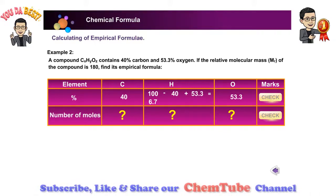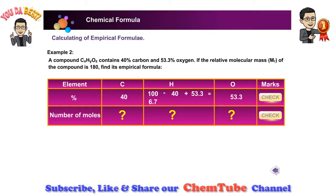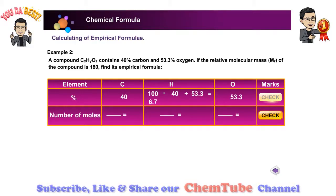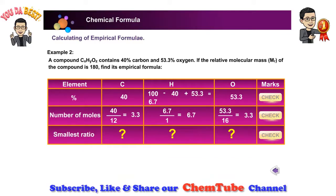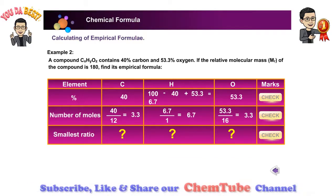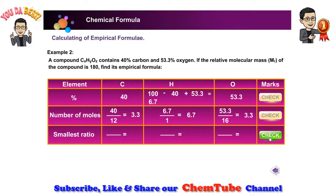Step 2: Divide the mass or percentage by relative atomic mass, AR, to find the number of moles. Type in your answer and click the check button. Step 3: Find the smallest ratio by dividing by the smallest number obtained in Step 2. Type in your answer and click the check button.